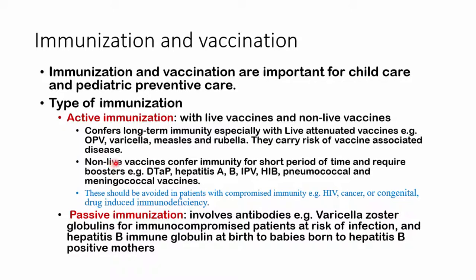With the non-live vaccines, these are going to be conferring immunity for a shorter period of time and they require boosters. So vaccines such as diphtheria, tetanus, acellular pertussis, hepatitis A and B, inactivated polio vaccine, haemophilus influenzae type B, pneumococcal vaccine, as well as some meningococcal vaccines. Remember that live attenuated vaccines must not be given to patients that are immunocompromised — due to HIV, cancer, congenital anomalies, or drug-induced immunodeficiency.